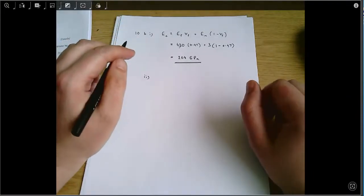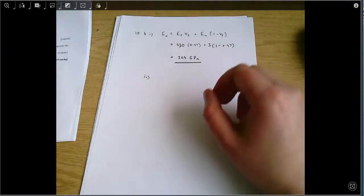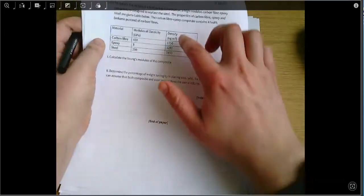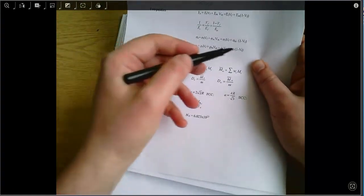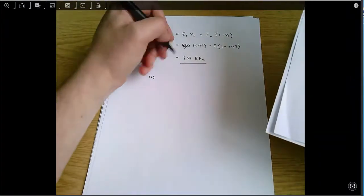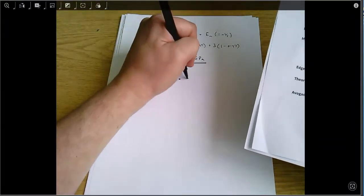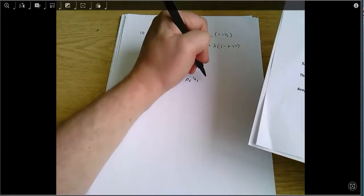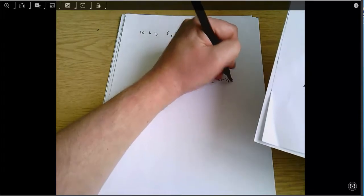Part 2 says determine the percentage of weight saving. So now we're into weight. We've got these densities in the question and we look at the formula sheet for composites. Rho is density and there's this density equation here. So I'm just going to jump straight to that. The density of the composite is the density of the fiber times volume fraction of fiber, plus density of the matrix times 1 minus volume fraction of the fiber.